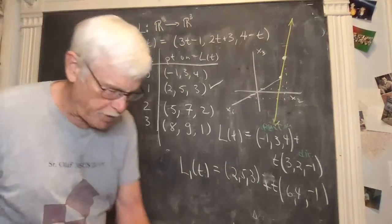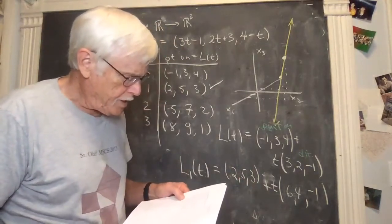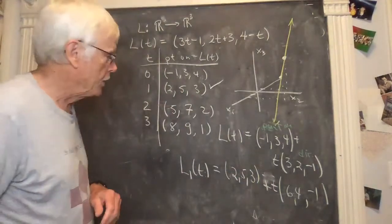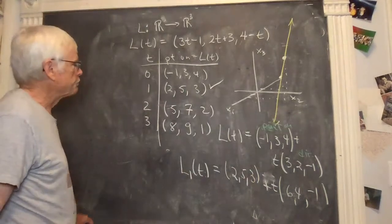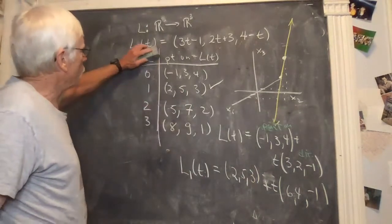All right. So I think this is the first two parts, or three parts. Now we want to find a symmetric Cartesian equation for the same thing. So I think I'll erase everything but the equation for L.